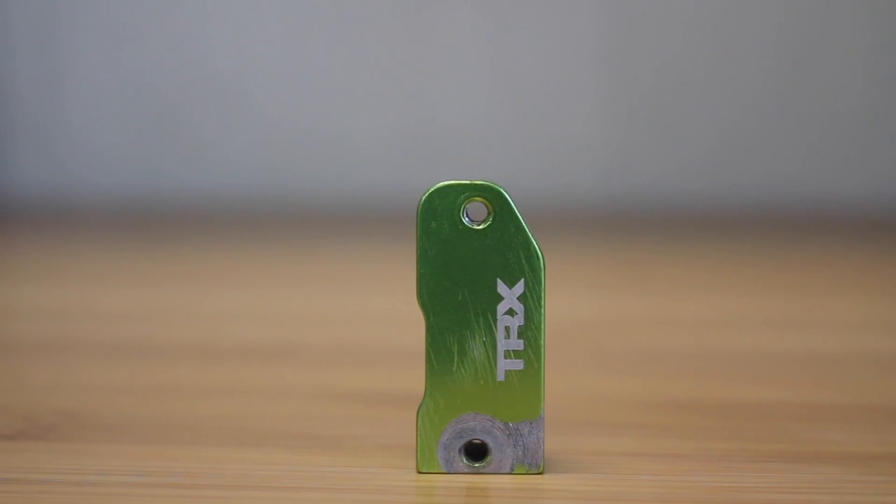Now the reason you would do this is because over time, as you can see, the anodizing starts to wear out just from regular use. So by de-anodizing it, you'll help even out the look of the finish by making it all silver.